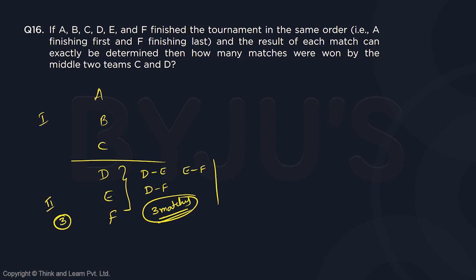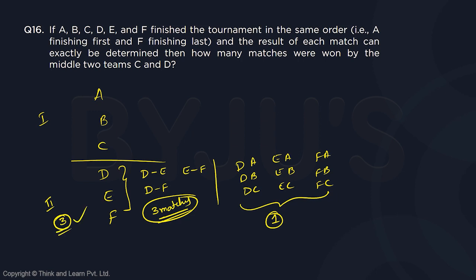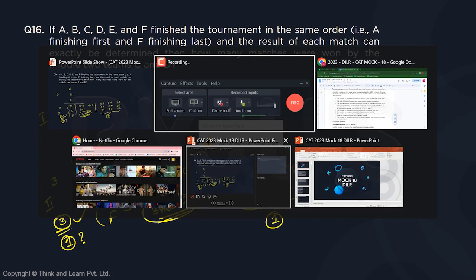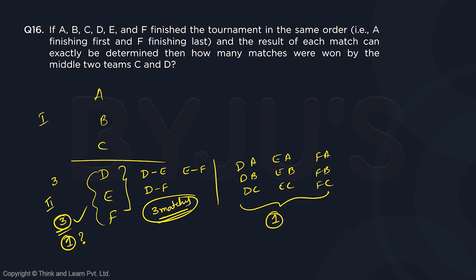What about the matches with group 1? D versus A, D versus B, D versus C. Similarly E versus A, E versus B, E versus C, and F versus A, F versus B, F versus C. In all these matches at most one match can be won. So three is guaranteed, and this one extra point may or may not happen. Which means the total score of group 2 could be 3 or 4.